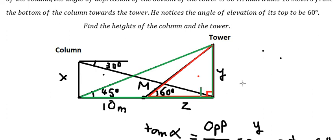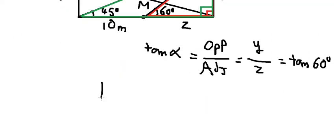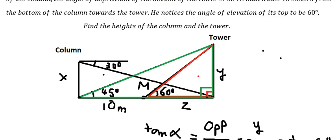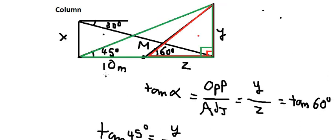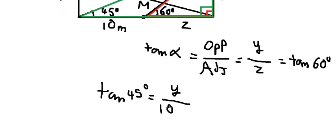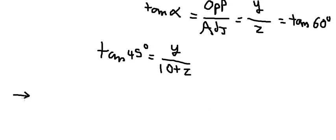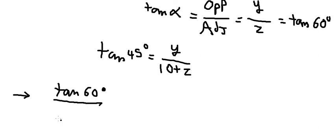We have a right triangle, so we apply the same formula. The opposite is Y, the adjacent is 10 plus Z. Now we apply the ratio: tan 60° over tan 45°, with adjacent 10.